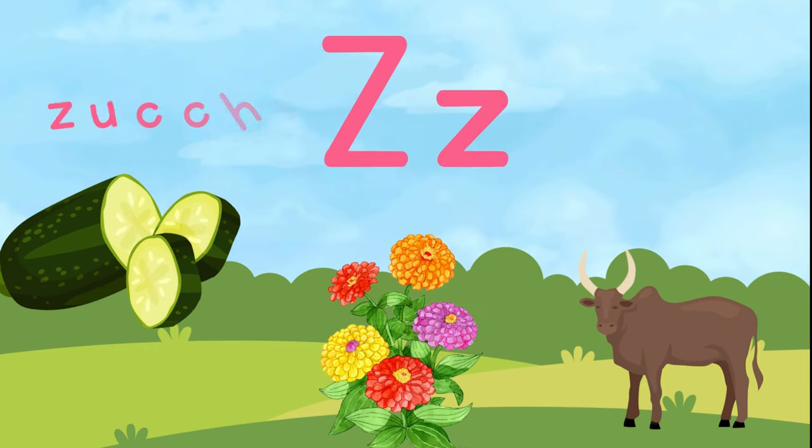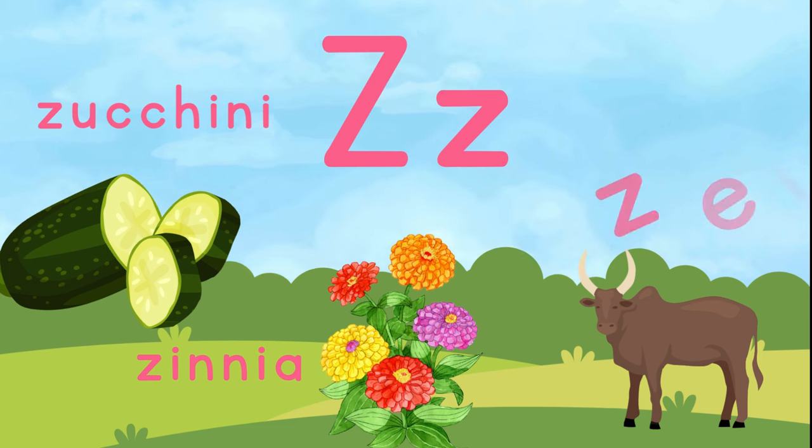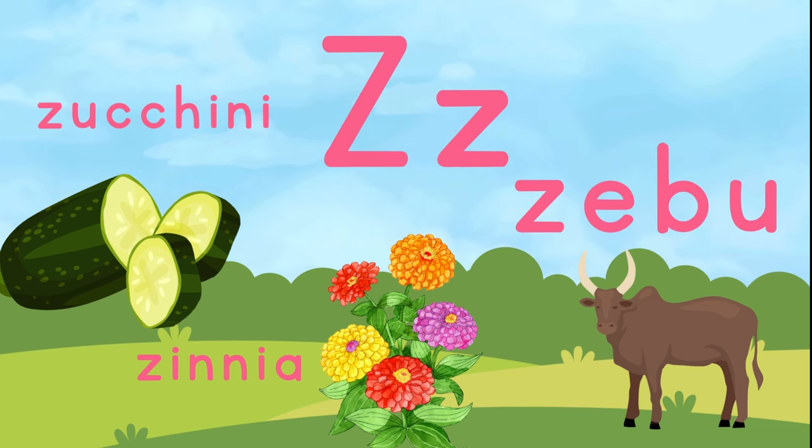This is the letter Z. Z is for zucchini. Z is for zinnia. And Z is for zebu.